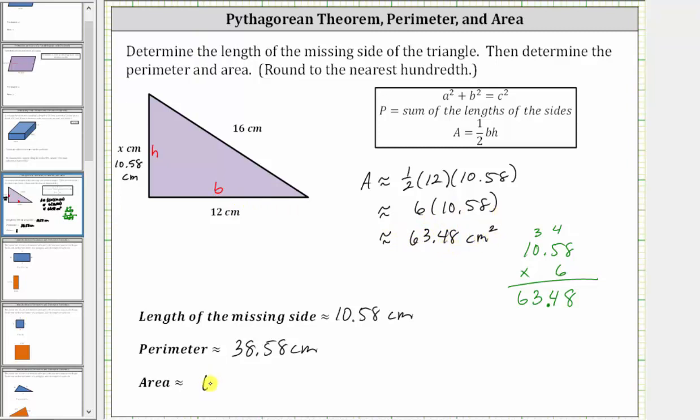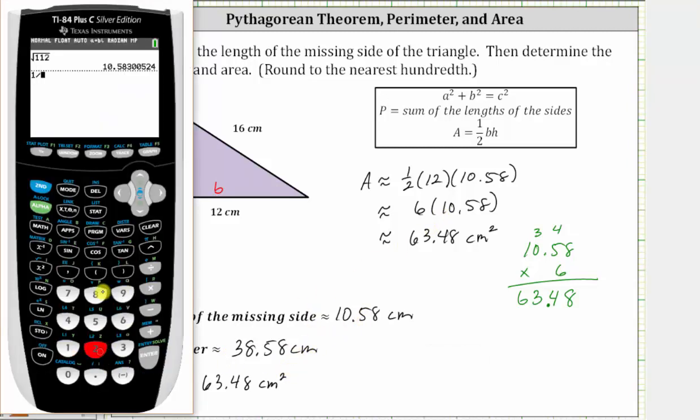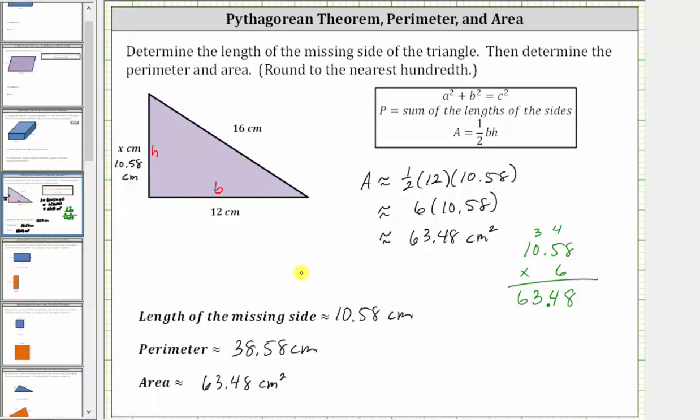Approximately 63.48 square centimeters would fit into the given right triangle. Before we go, let's go ahead and check this product on the calculator. We have one divided by two times 12 times 10.58, which does verify our work is correct. I hope you found this helpful.